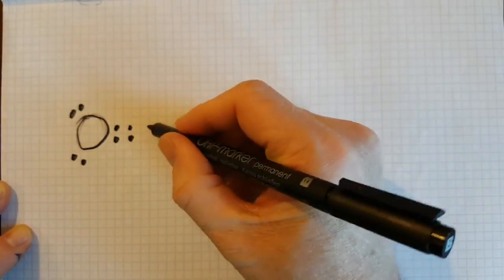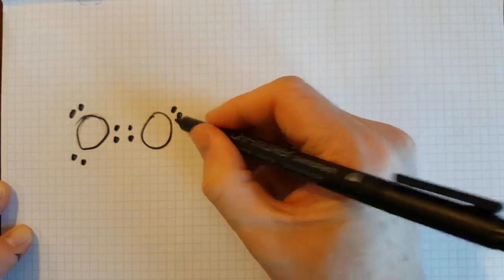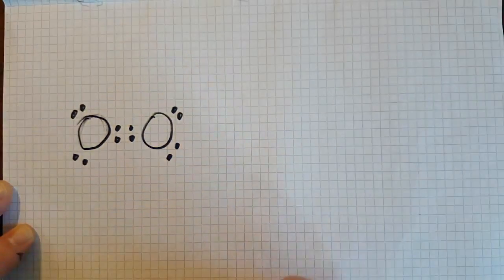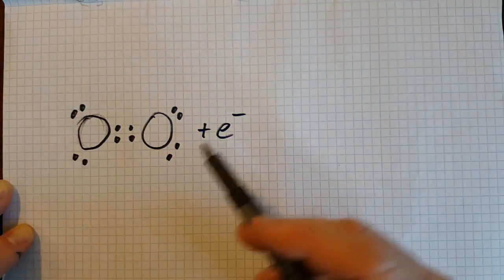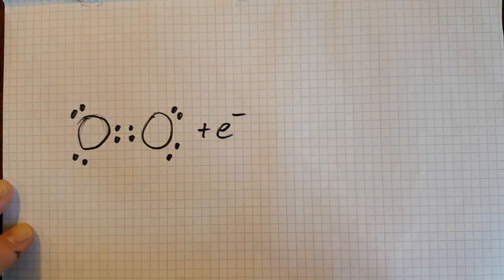Here's the oxygen molecule. Now what can happen is that it can gain an electron.